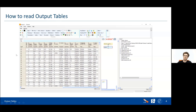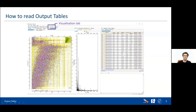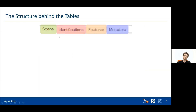Also in MaxQuant itself there's something called the visualization tab, where you can visualize your data and see all your output tables. There are four different levels into which we sort our output tables. These four different classes form the structure behind the tables, and when you understand these four different levels, you get very good at understanding the tables themselves. It's also important to know which tables to look at when you want to answer a specific question.